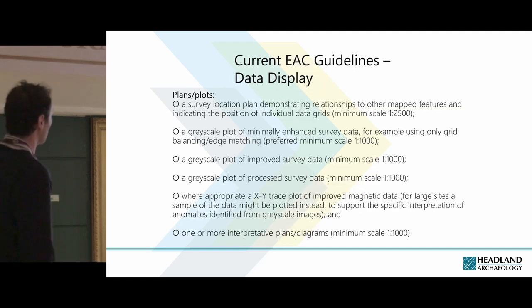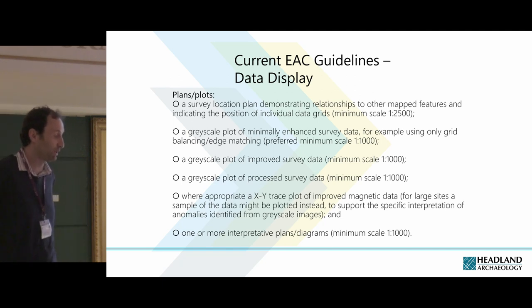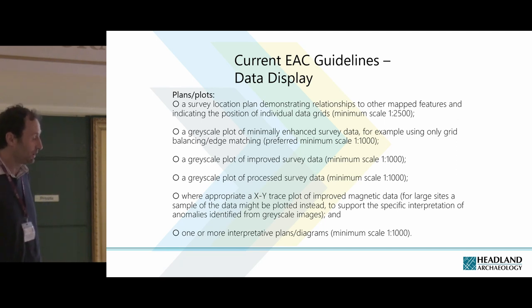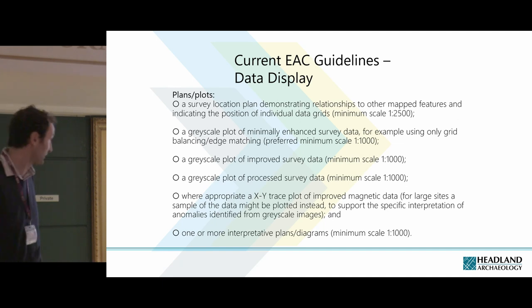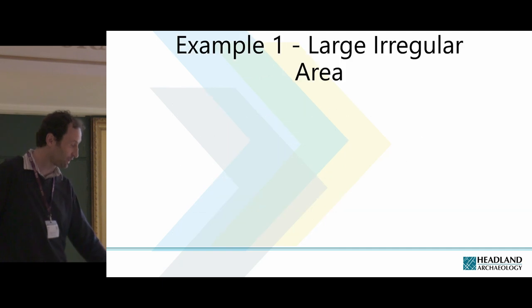These are the current EAC guidelines on data display. They want a survey location plan demonstrating the relationships to other mapped features — essentially an overview showing where your plot is. They want a grayscale plot of minimally enhanced survey data, a grayscale plot of improved survey data, a grayscale plot of processed survey data, and where appropriate, XY trace plots of the improved magnetic data. After that, they want interpretations at a minimum scale of one to a thousand. A report for, say, 200 hectares can end up being 200 illustrations long for no real reason, with no benefit for the user.